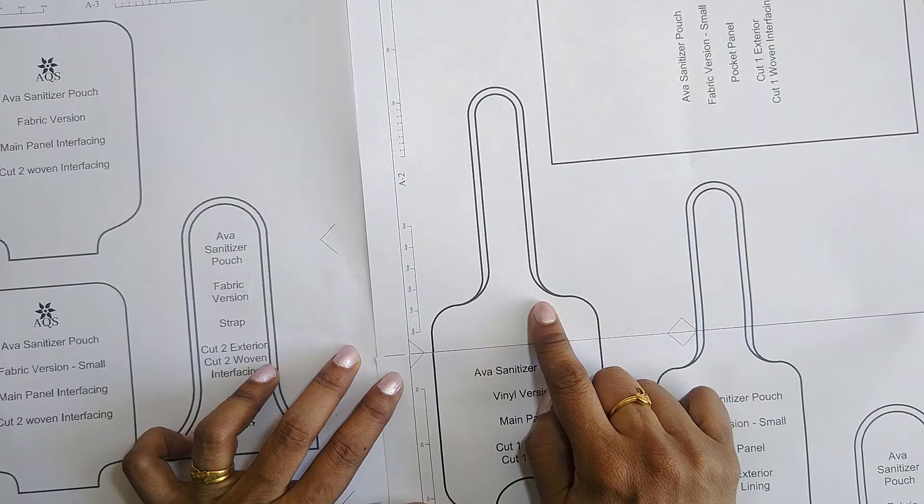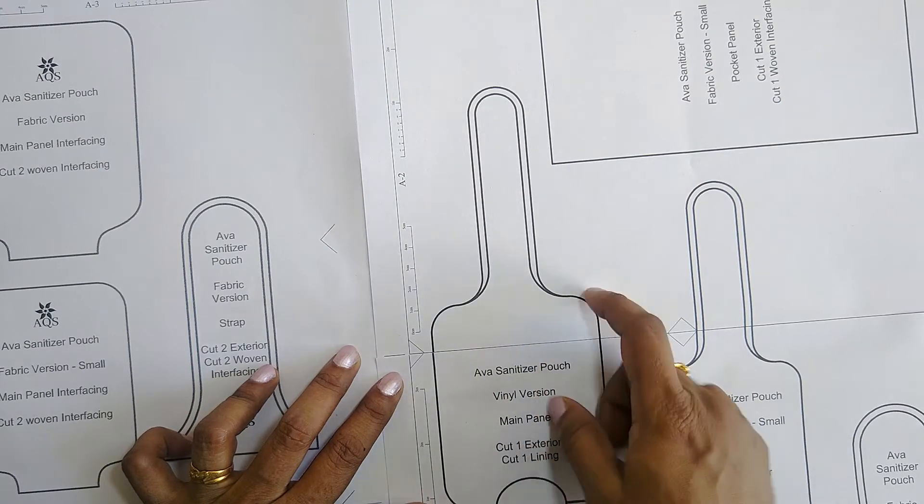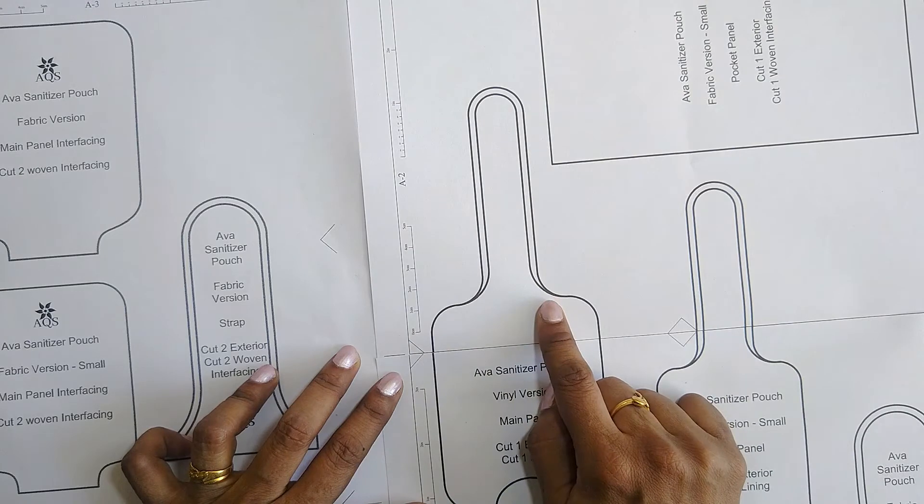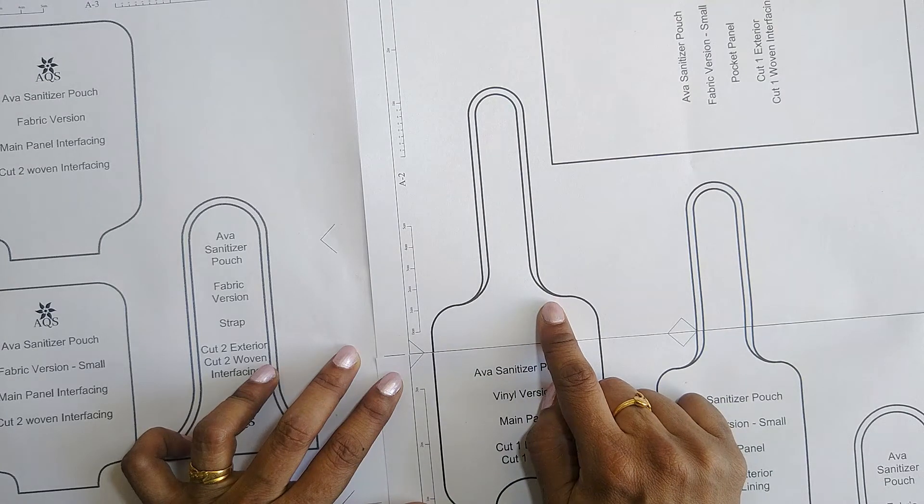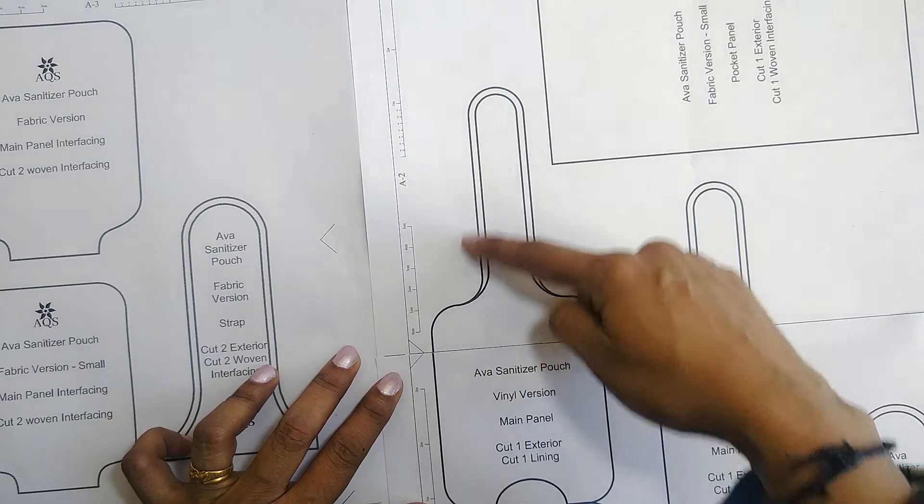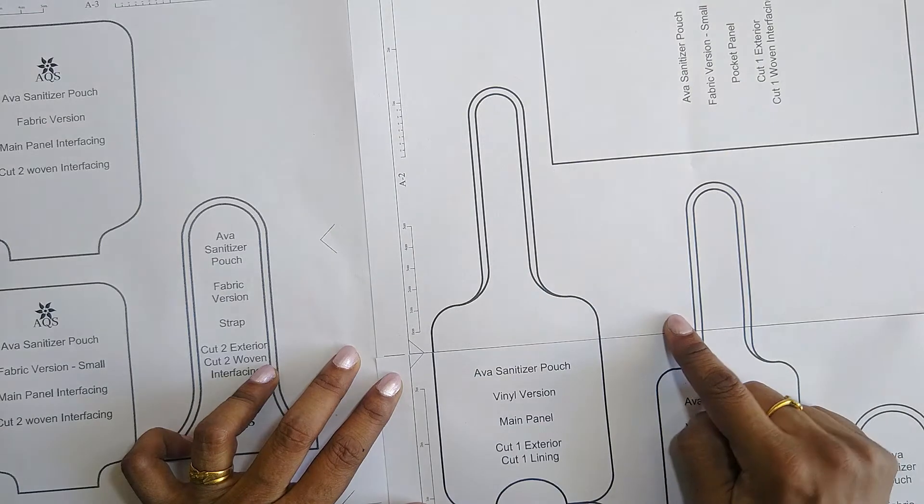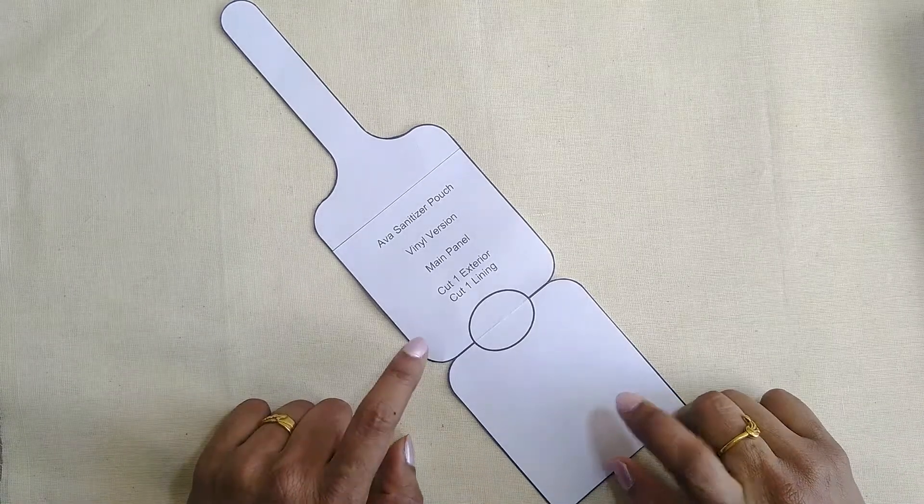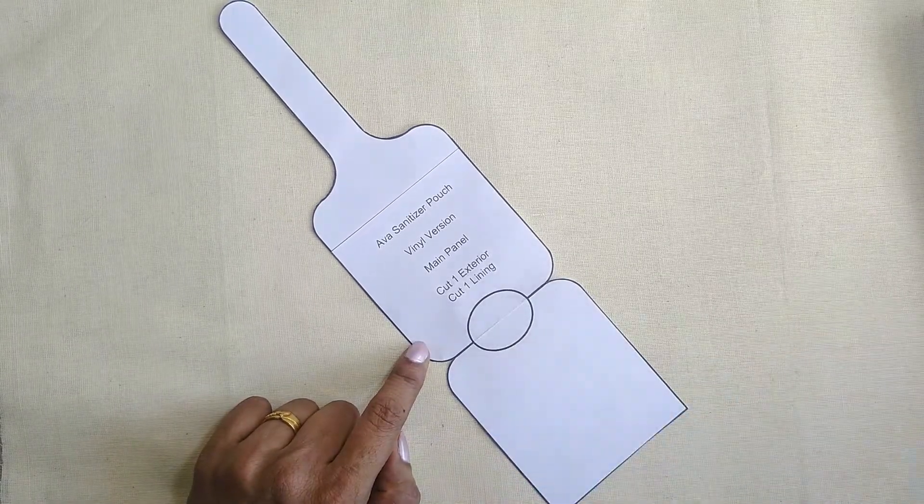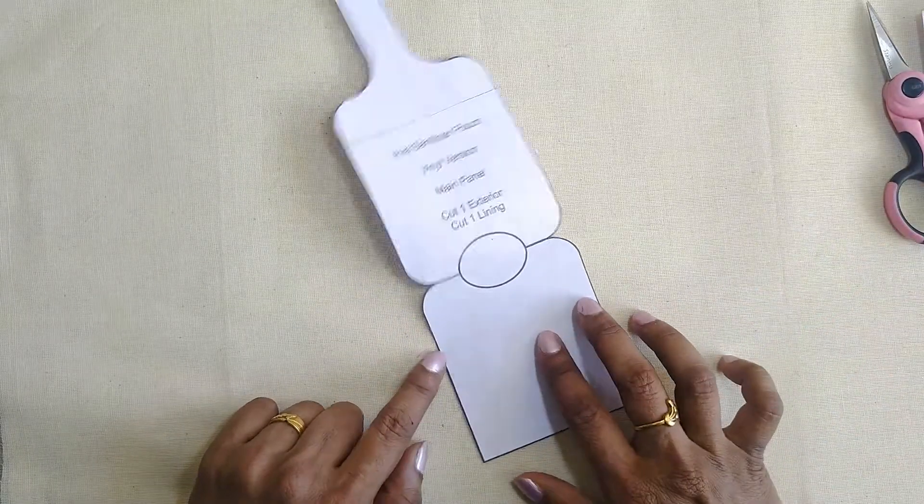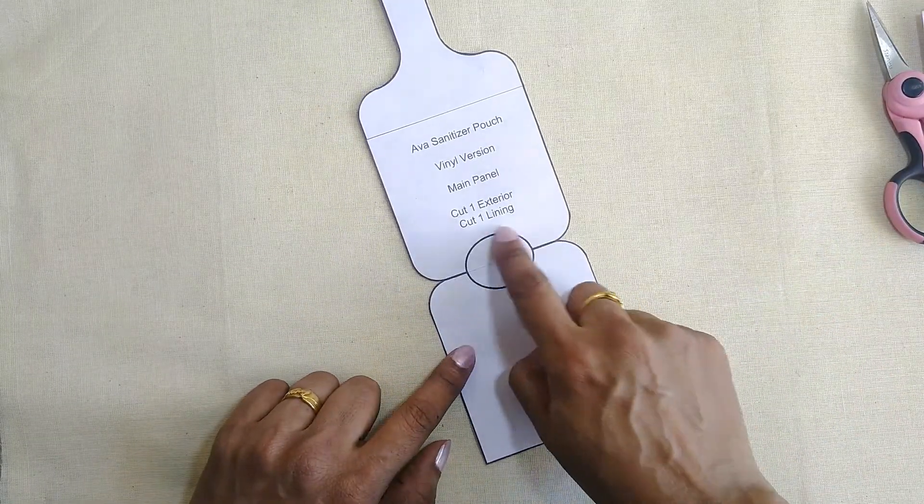If you like to use three-quarter inch hardware, then cut on the inner line. If you normally use one inch hardware, cut on the outer line. This is the pattern piece for the vinyl version.